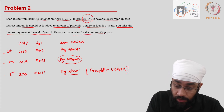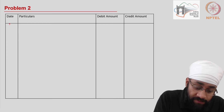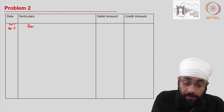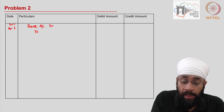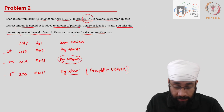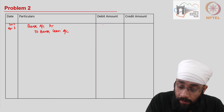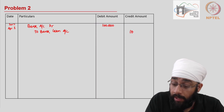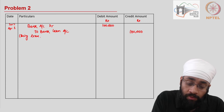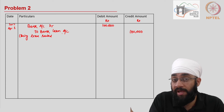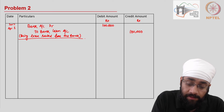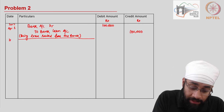Now let's write the general entries for the tenure of the loan. On April 1, 2017, when the loan is raised, money comes into your bank account, so Bank Account is debited. A liability is created, so Bank Loan Account is credited. The debit and credit amounts are both 100,000 rupees, with a narration: being loan raised from bank for XYZ purposes.